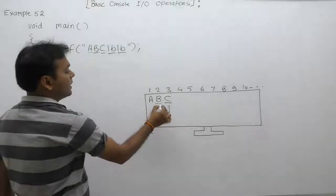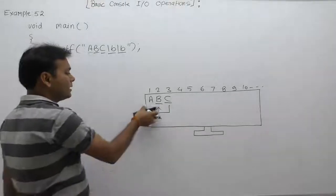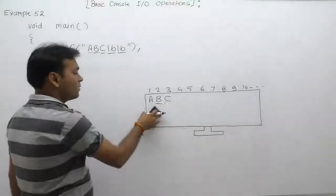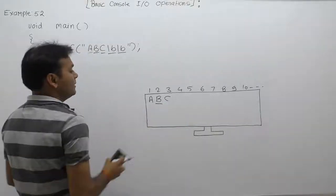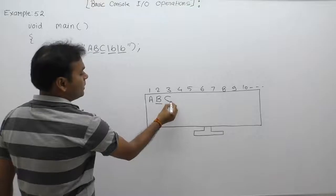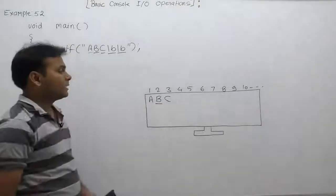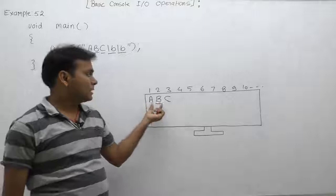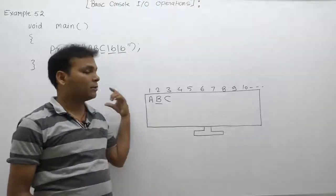This is the final result of this program. The output of that program is 'ABC', but the cursor will be available inside character 'b', meaning on the second position. This is the final result of that code.